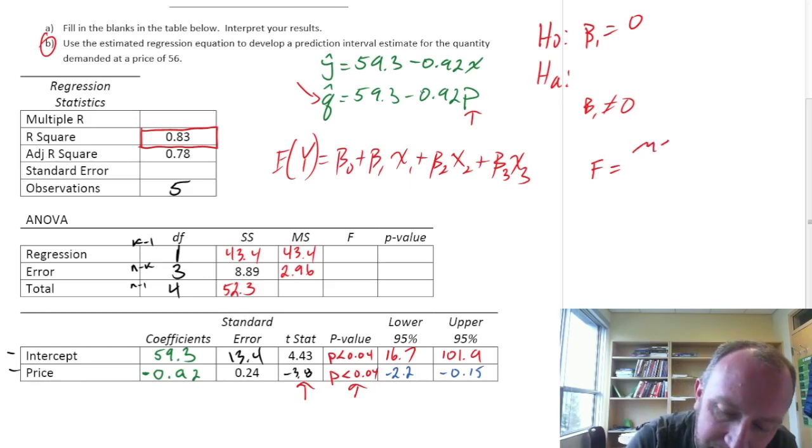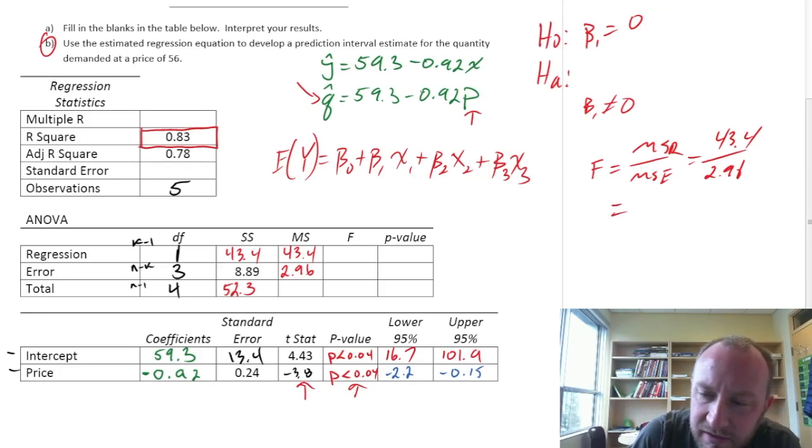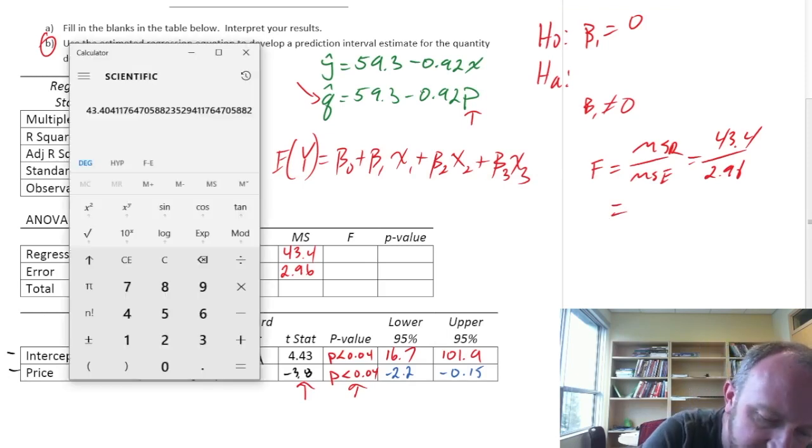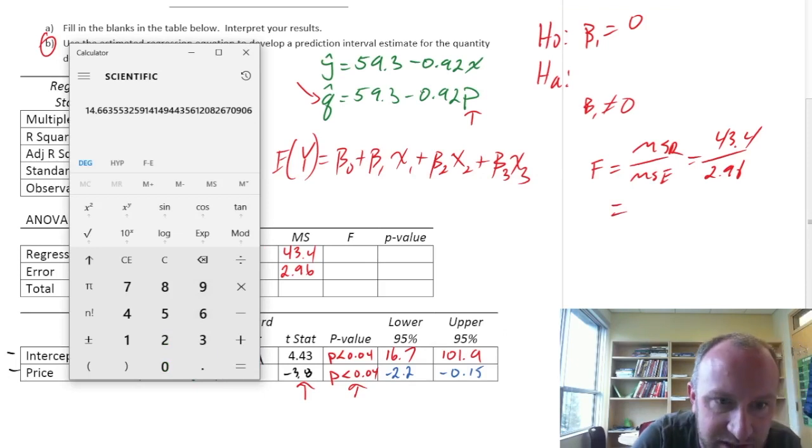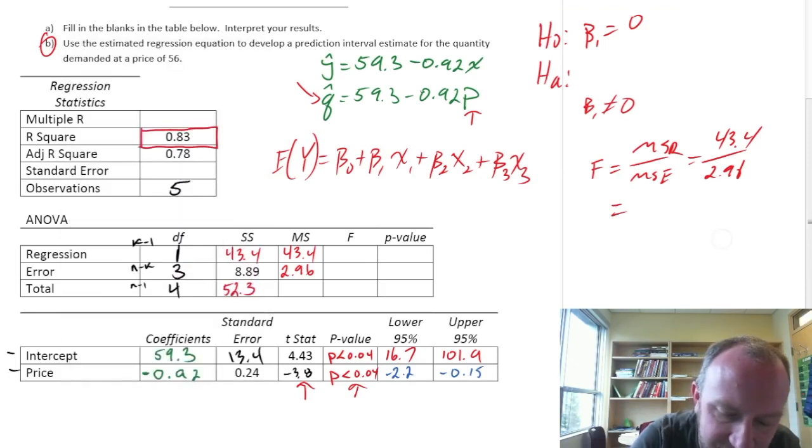There's two ways that you can do it. But one, of course, is MSR over MSE. So, this is 43.4 divided by 2.96. And so, this is going to give us, so just divide that by 2.96. So, 14.67. 14.67.